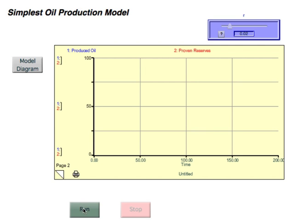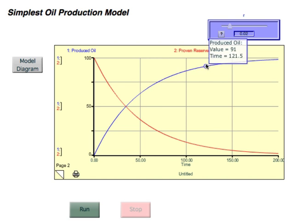You could hit run here. Run the model, and there you go. You see, sure enough, proven reserves starts off at 100 and it drops down to practically nothing after 200 years here. Produced oil is just the inverse of that—it rises up.